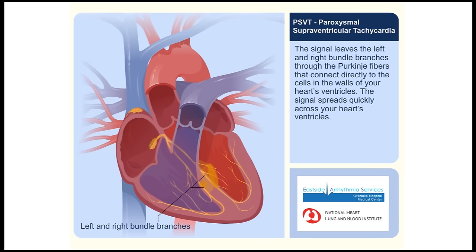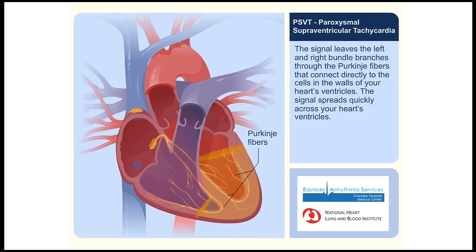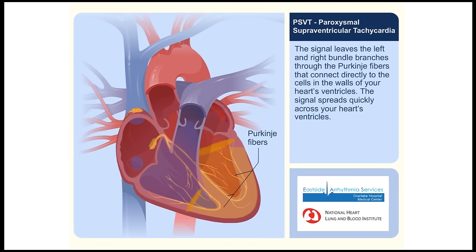The signal leaves the left and right bundle branches through the Purkinje fibers that connect directly to the cells of the walls of your heart's ventricles. The signal spreads quickly across your heart's ventricles.